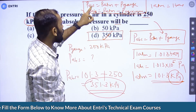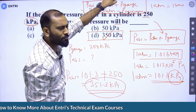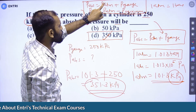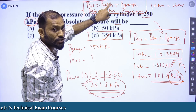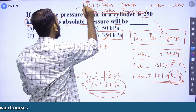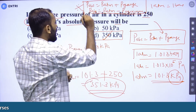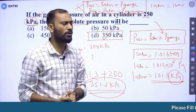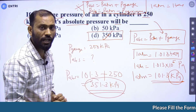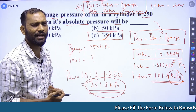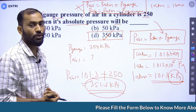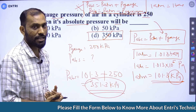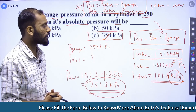Absolute pressure = atmospheric pressure plus gauge pressure. Alternatively, absolute pressure = atmospheric pressure minus vacuum pressure. Note: 1 atmosphere = 1.013 × 10^5 Pascal = 101.3 kilopascal. This is a straightforward numerical question using direct substitution.